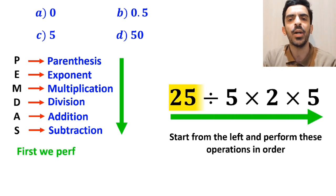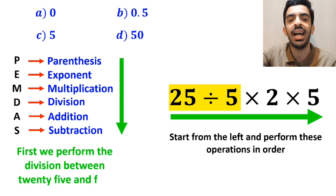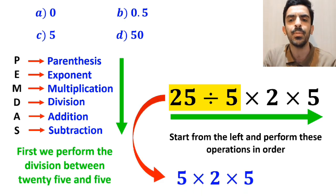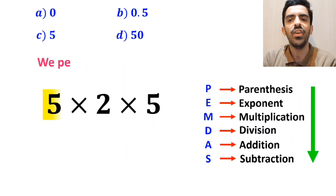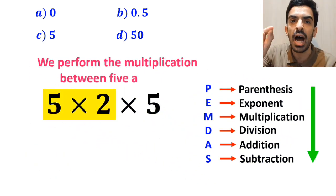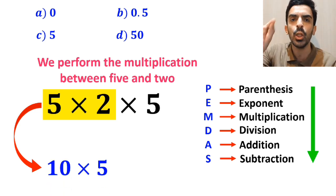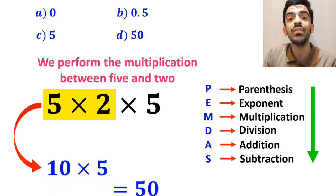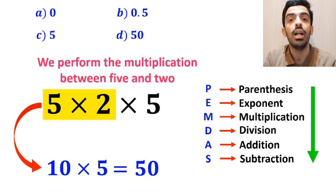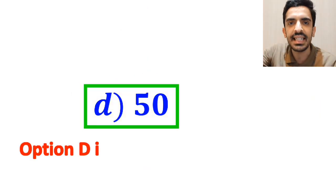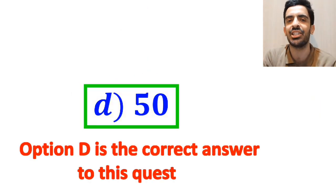So first, we perform the division between 25 and 5, which simplifies this expression to 5 multiplied by 2 and again multiplied by 5. And in the next step, we perform the multiplication between 5 and 2. And instead of this expression, we can write 10 multiplied by 5, which finally gives us the answer 50. And therefore, option D is the correct answer to this question.